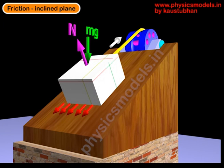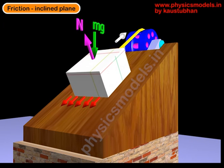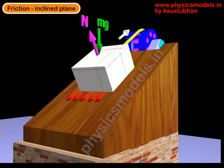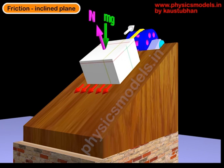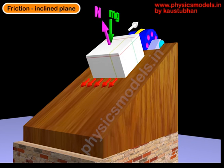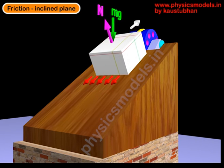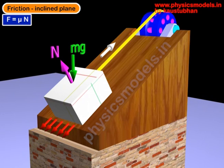The rope pulling the block up has a white arrow showing the upward pulling force. The green arrow pointing downwards is the weight of the block, and the pink arrow is the normal reaction of the inclined plane back on the block.